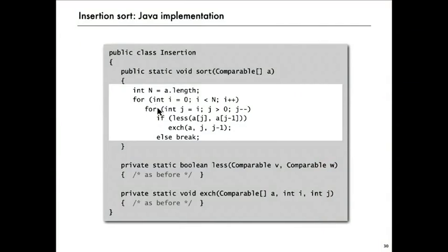It's got two nested for loops. Selection sort had two nested for loops. A test, a comparison, and an exchange inside the for loop. And that's a fine implementation of an elementary sorting method.